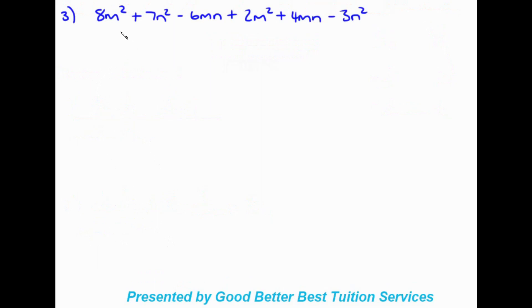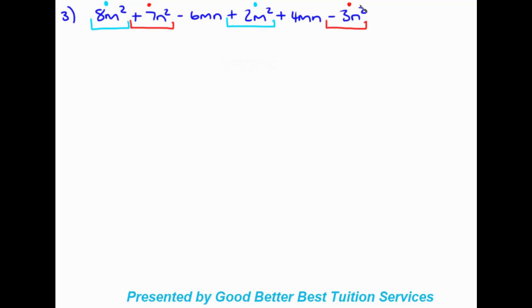Moving on to the last horizontal method question. We have 8m² — let's look for other m² terms — and we find positive 2m². For the n² terms, we have positive 7n² and minus 3n². Then for mn terms, we have negative 6mn and positive 4mn. I'm adding boxes around each term including its sign so we don't get confused.